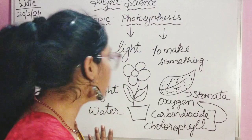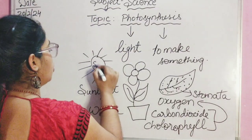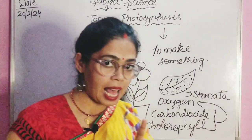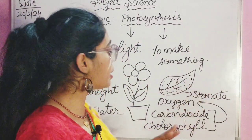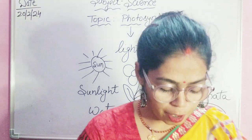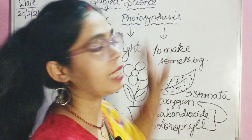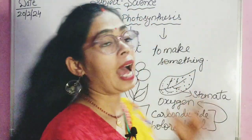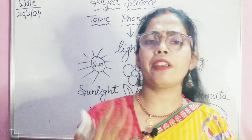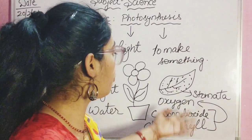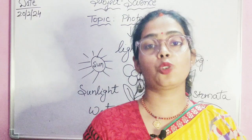So this is the process through which plants prepare their food. Sun is very important; the water is absorbed through the roots of the plant. Sunlight, water, carbon dioxide, chlorophyll, and oxygen — these are all parts of the process through which plants prepare their food, and this process is known as photosynthesis.